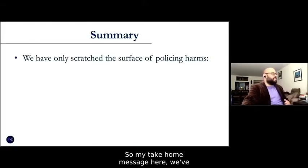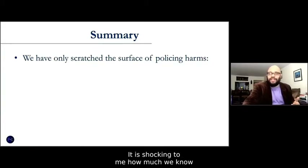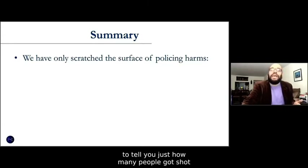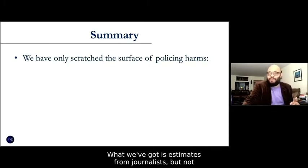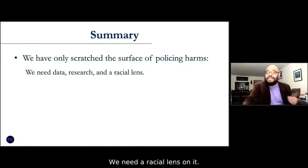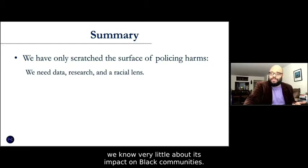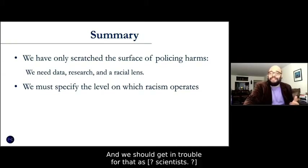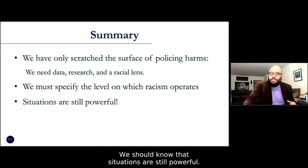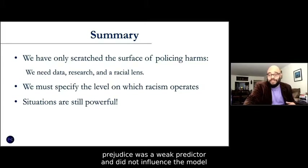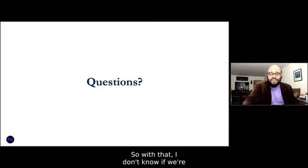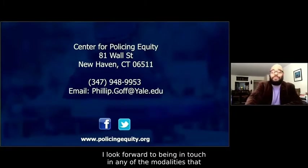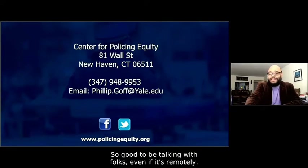My take-home message: we have only scratched the surface of policing harms. It's shocking how much we know about so many other aspects of public life, but we absolutely don't have the information to tell us how many people got shot last year by the police — we have estimates from journalists, not actual numbers. That means we need data, we need research, and we need a racial lens on it, because even when we know things about policing, we know very little about its impact in Black communities. We've got to specify the level on which racism is operating. Situations are still powerful — in both studies I showed you, prejudice was a weak predictor and did not significantly influence the models. I look forward to being in touch in any of the modalities available to us. Thanks very much.